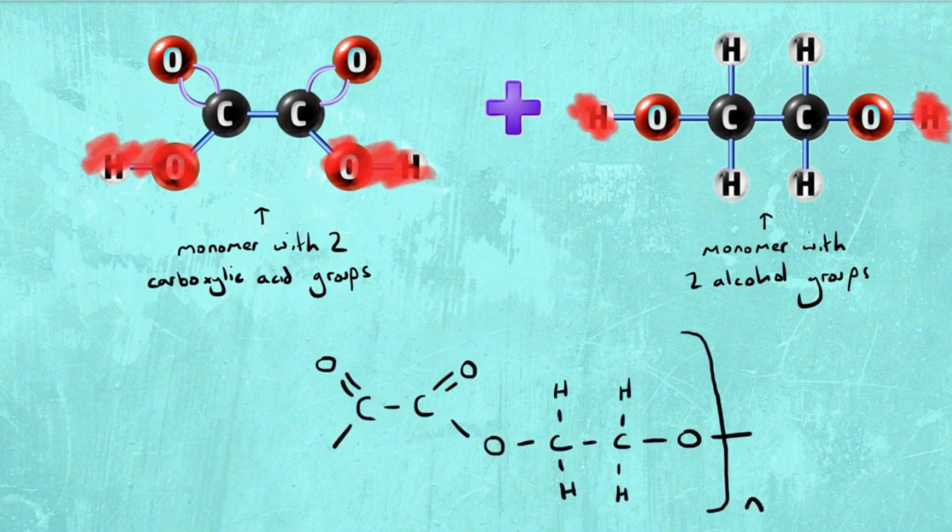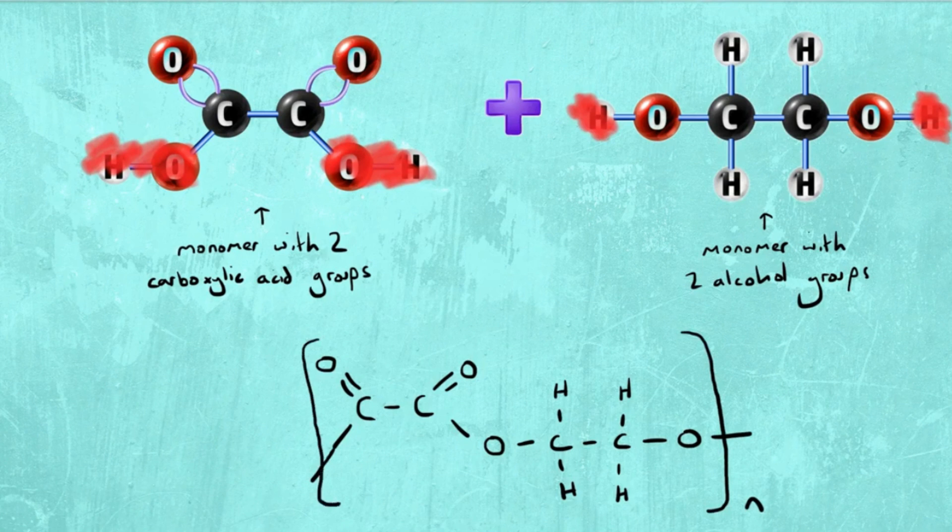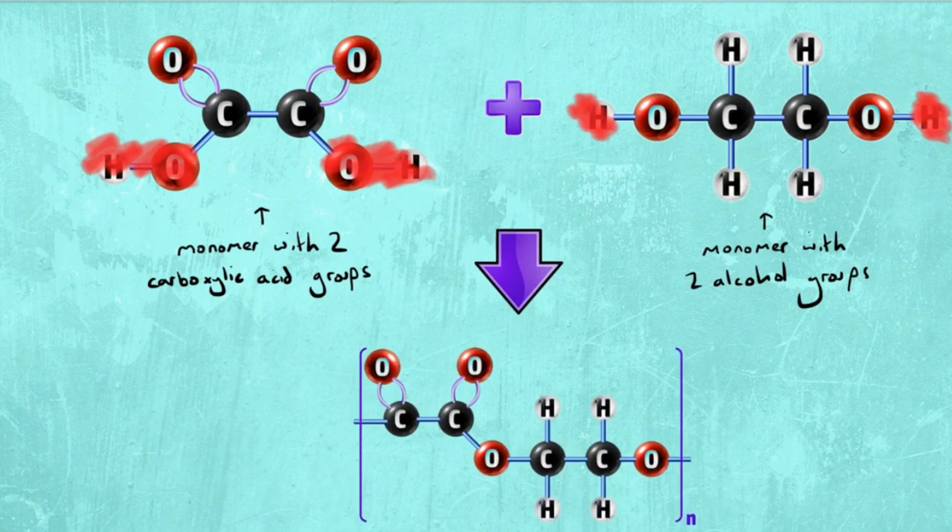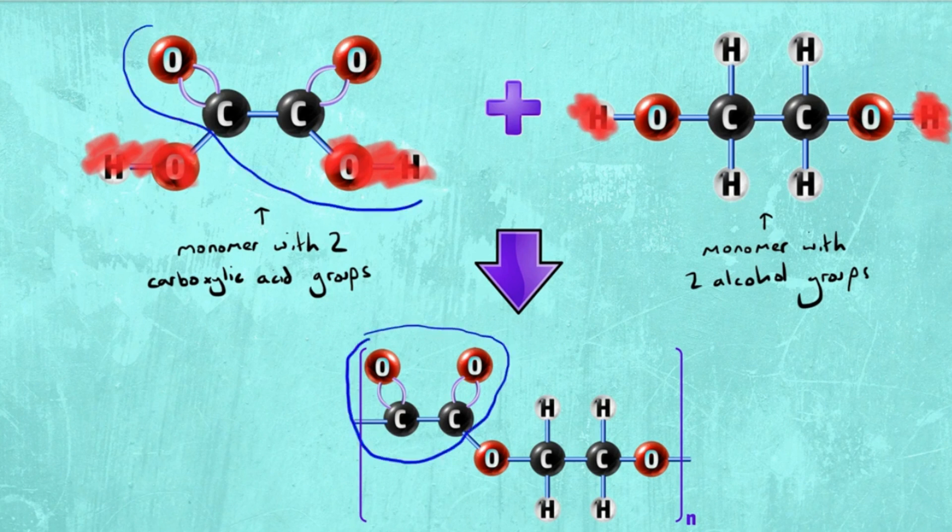All you have to do is draw a bracket around the bonds with no atoms attached, which looks like this. From the diagram you can see that the carboxylic acid is here and the alcohol is here, giving you a repeating unit of a polyester.